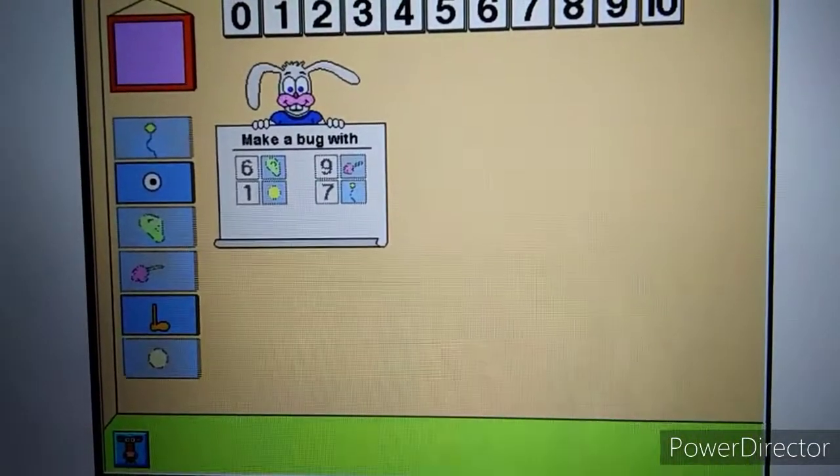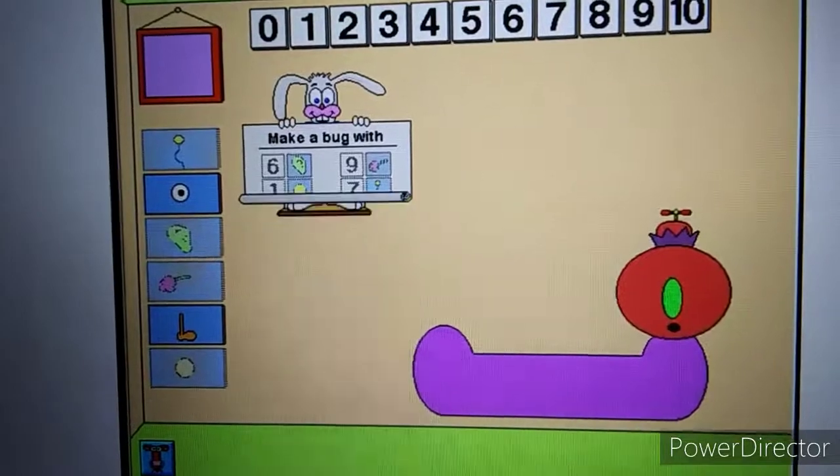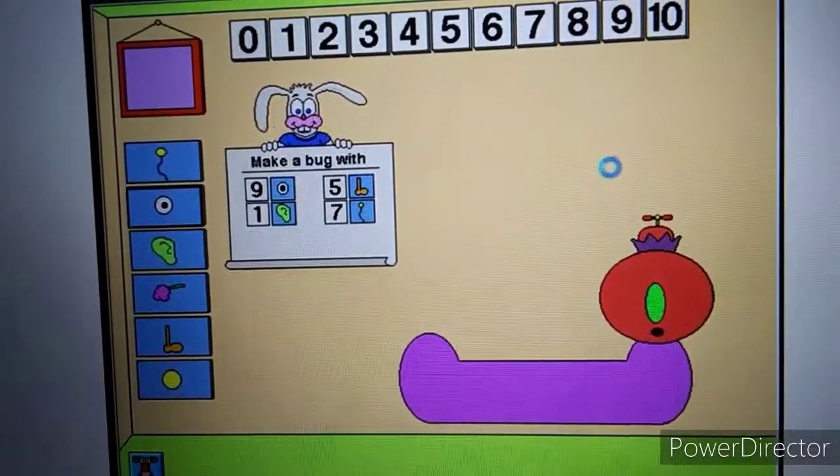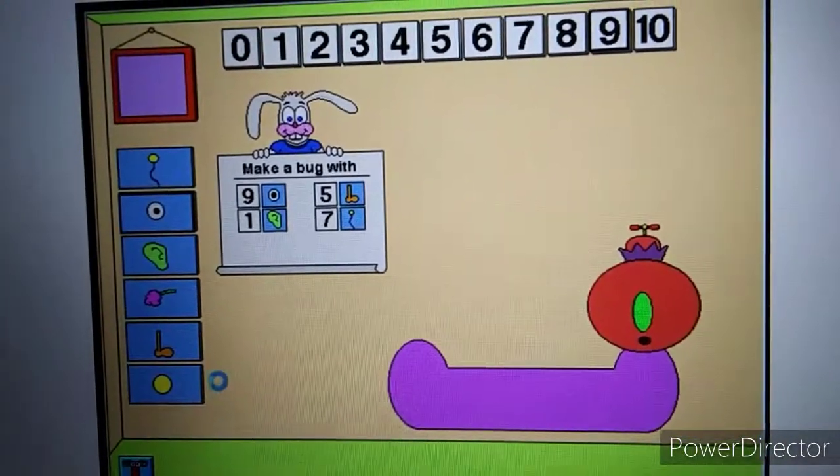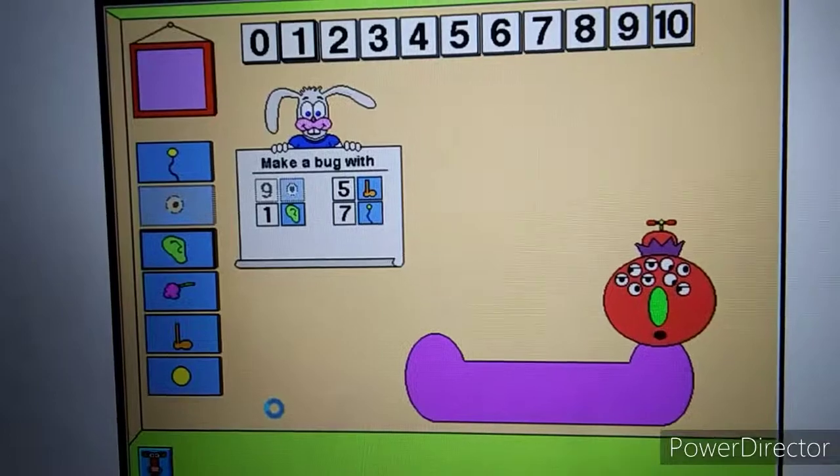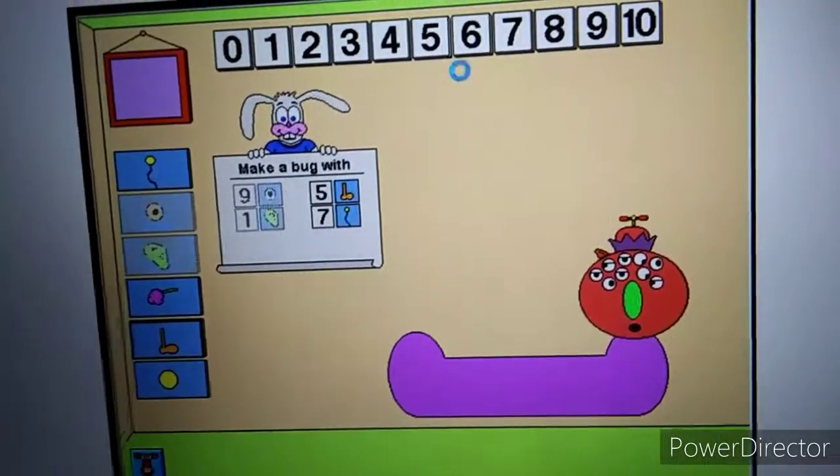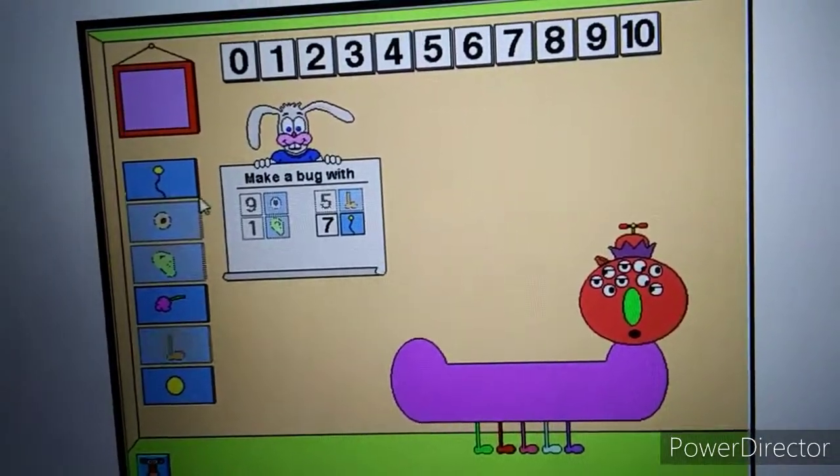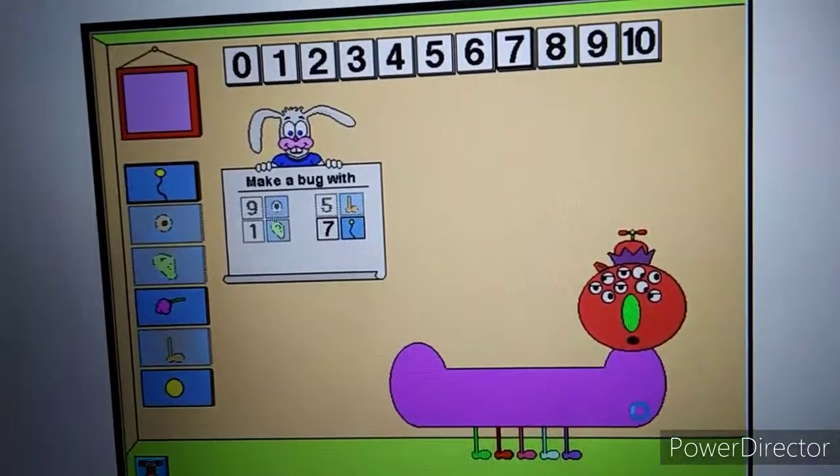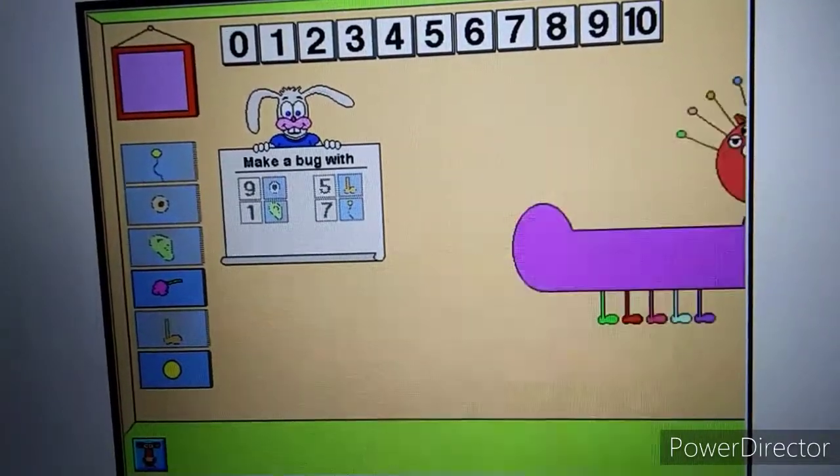Eyes. Nine eyes. Ears. One ear. Feet. Five feet. Antennae. Seven antennae. Awesome.